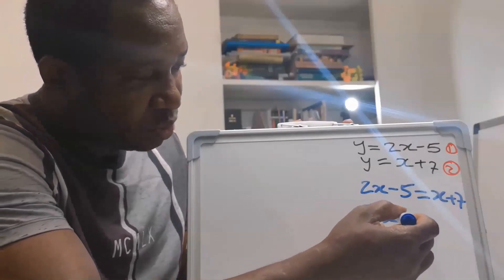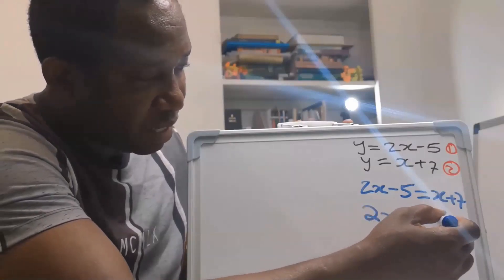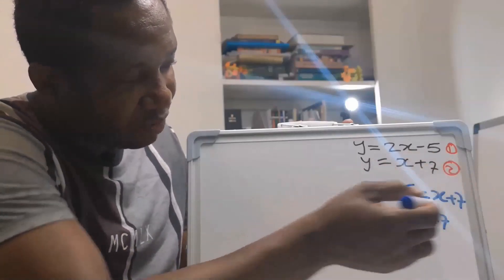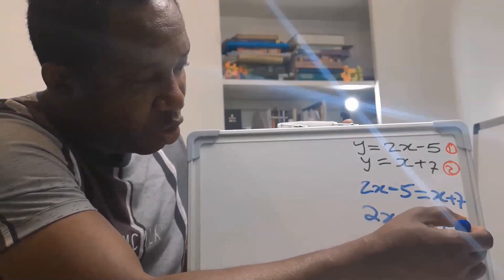X will move to the other side, and it will become 2X minus X is 7. 5 will move. Here is minus 5. On the other side, it becomes plus 5.